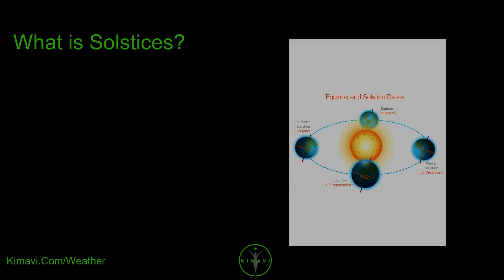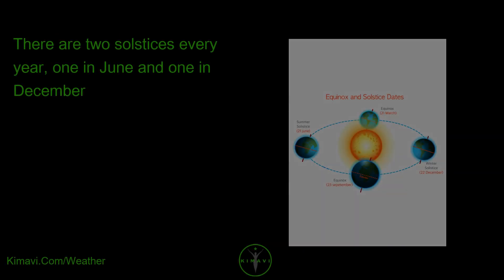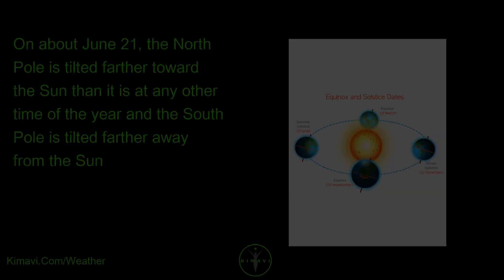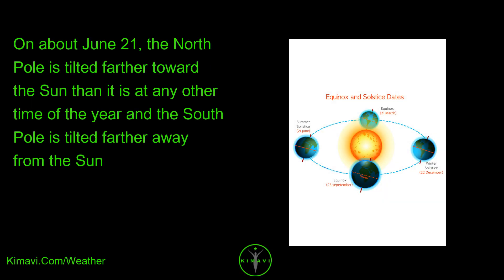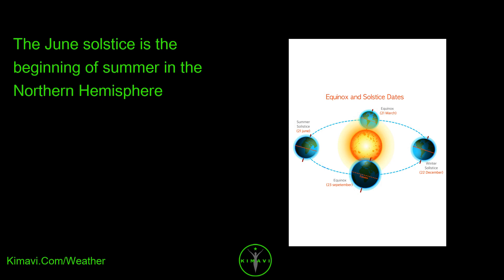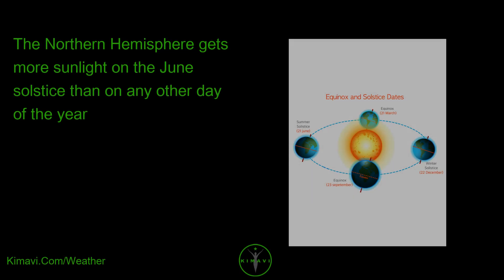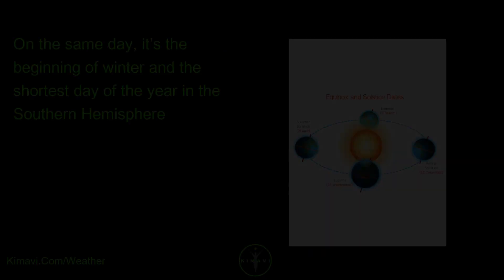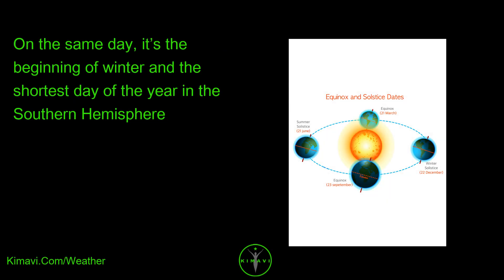What are solstices? There are two solstices every year, one in June and one in December. On about June 21st, the North Pole is tilted farther toward the sun than at any other time of the year, and the South Pole is tilted farther away. The June solstice is the beginning of summer in the Northern Hemisphere, which gets more sunlight on this day than any other. On the same day, it's the beginning of winter and the shortest day of the year in the Southern Hemisphere.